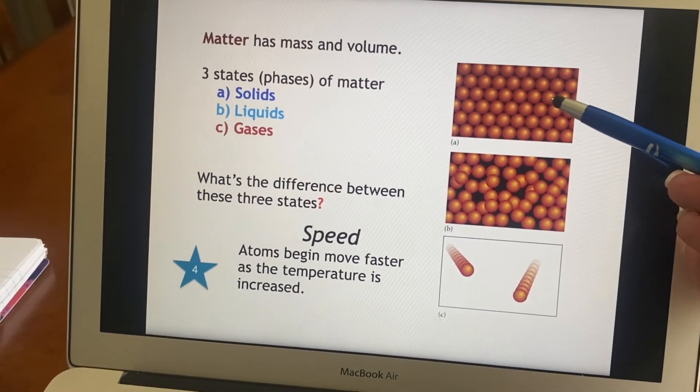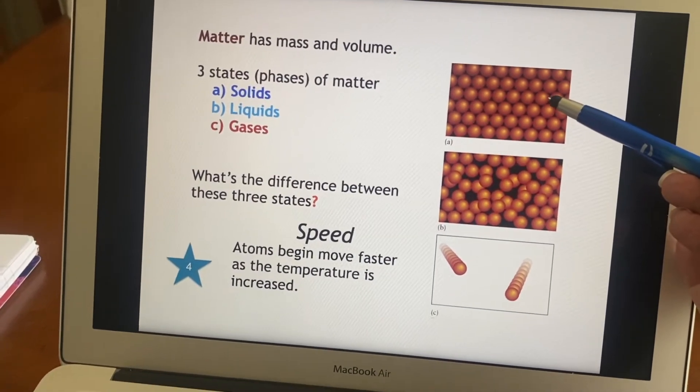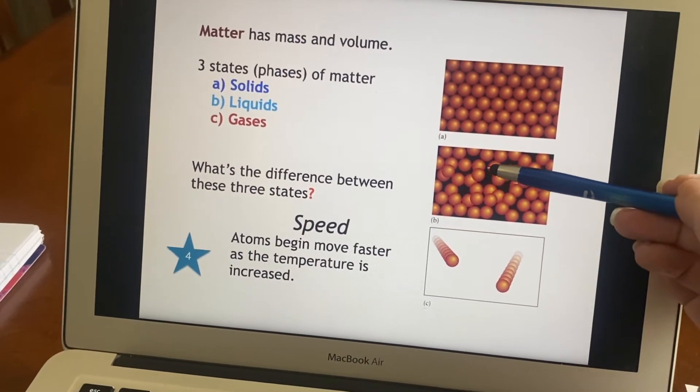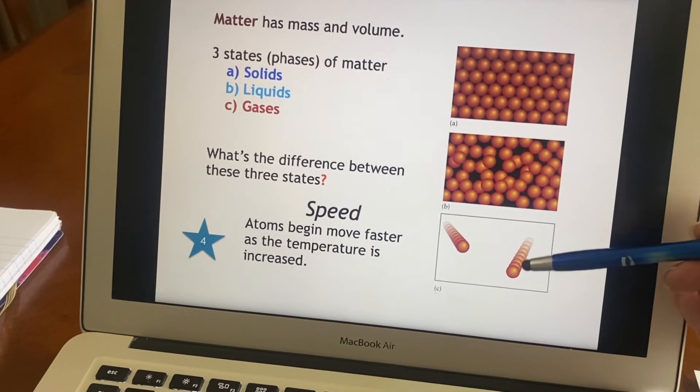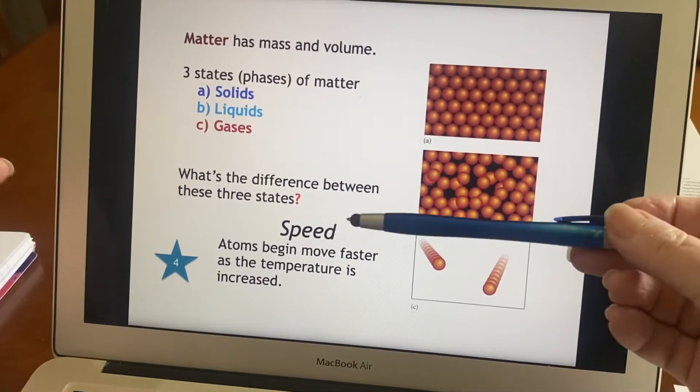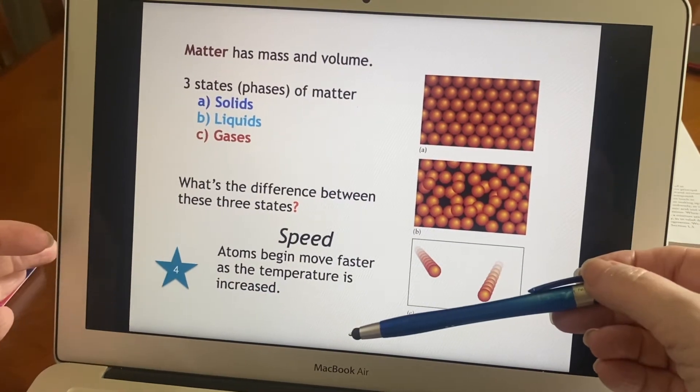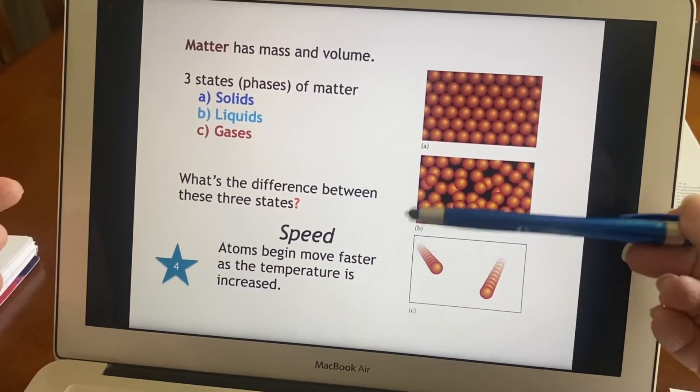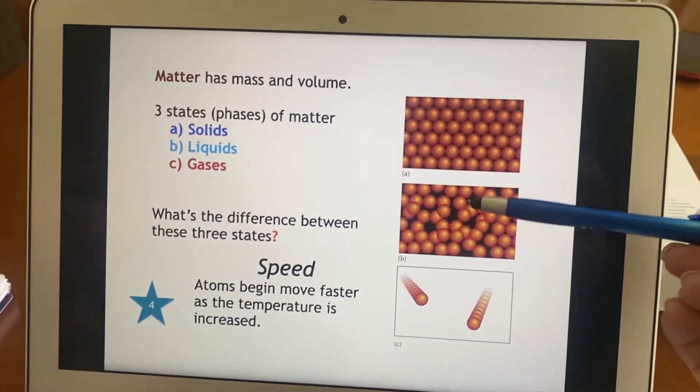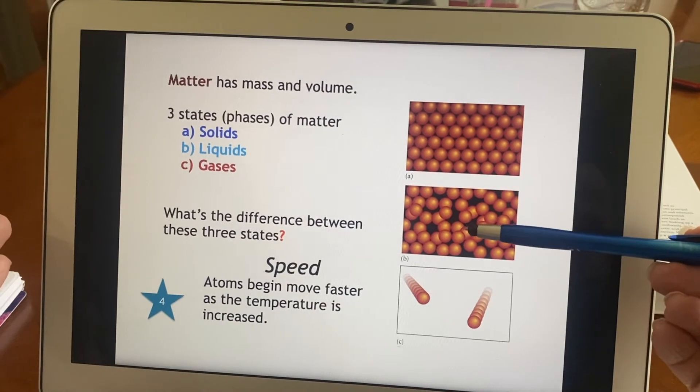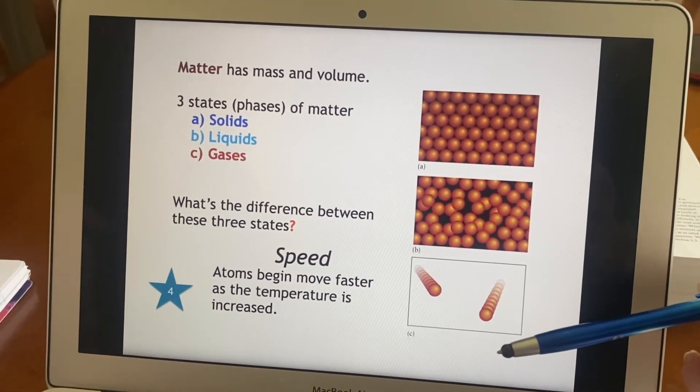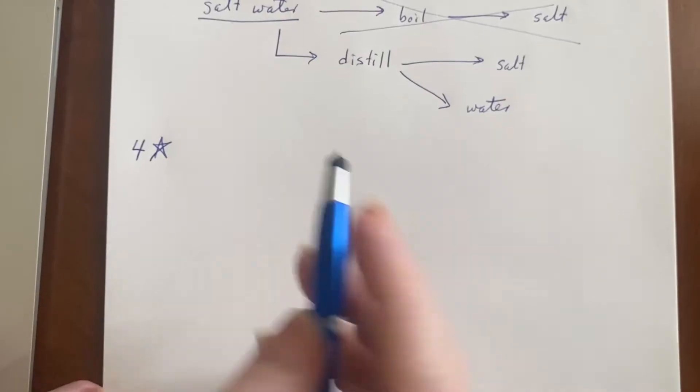This might just be jiggling a little in place. Here they're slowly moving around each other, and here they're just zipping along. These atoms move faster as the temperature's increased. So that explains why we might see something as a solid, add enough heat to it until it melts into this liquid, add even more heat to it and you can get it to turn into a gas.